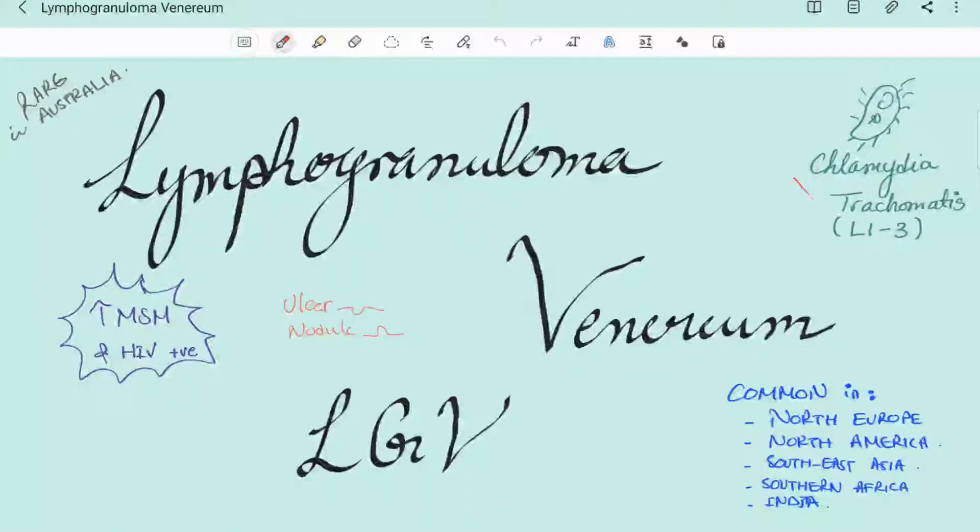The strains that cause lymphogranuloma venereum are chlamydia trachomatis L1, L2, and L3. Non-lymphogranuloma venereum genital chlamydia, which is the regular chlamydia that we hear about, is caused by the other serovars, which are D to K.